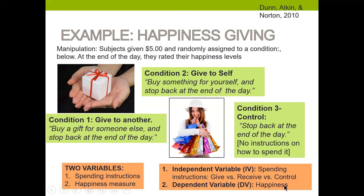The researchers thought that the dependent variable happiness would depend on which spending instruction participants were given. They actually had nice support for their hypothesis: the condition of giving to another resulted in significantly greater levels of happiness than giving to oneself or the control condition. This initial study supported the hypothesis that giving is better than receiving, and individual differences like depression were balanced out across groups through random assignment.